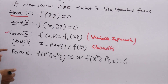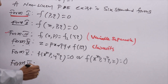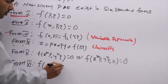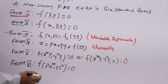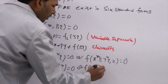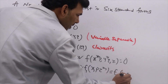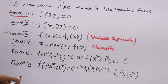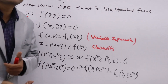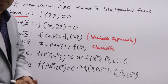Form 6 of non-linear PDE has the structure f(p · z^m, q · z^m) = 0, or f₁(x, p · z^m) = f₂(y, q · z^m) — these are the 6 forms in non-linear PDE. Our next discussion will cover all 6 forms, what each form is, and how to solve each one.